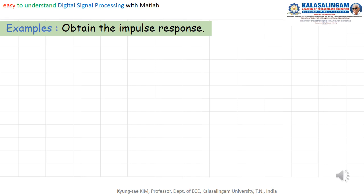Now let me take some examples. You can find x(n), x(n−2), and so on. Instead of x(n), we can use δ(n). Instead of x(n−2), we can use δ(n−2). Instead of x(n−4), we can use δ(n−4).